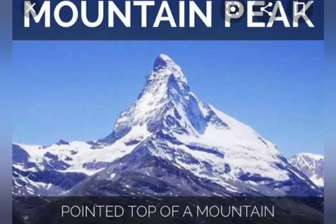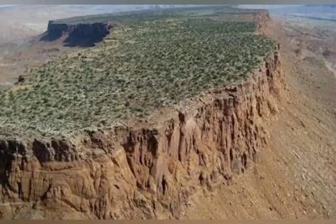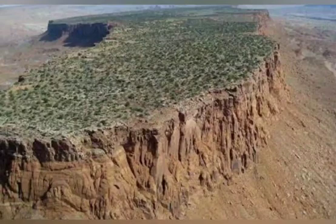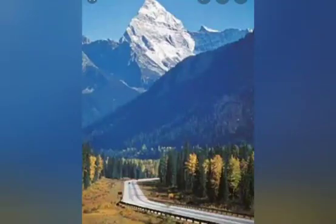Difference in the land — because of high and low levels, land gets different forms. Mountains, peaks, hills, hillocks, plateaus, plains, passes and valleys are some of the land forms.